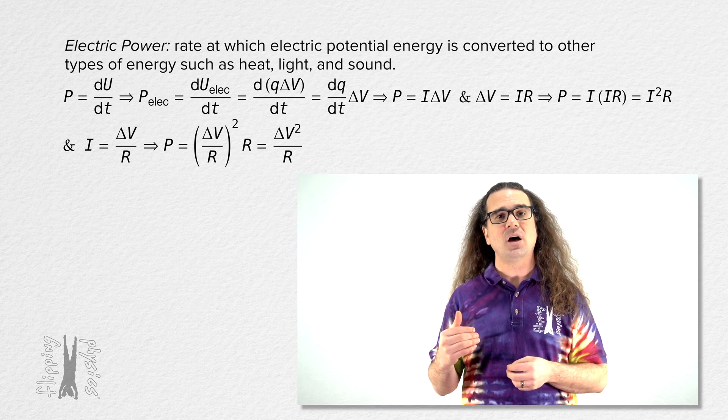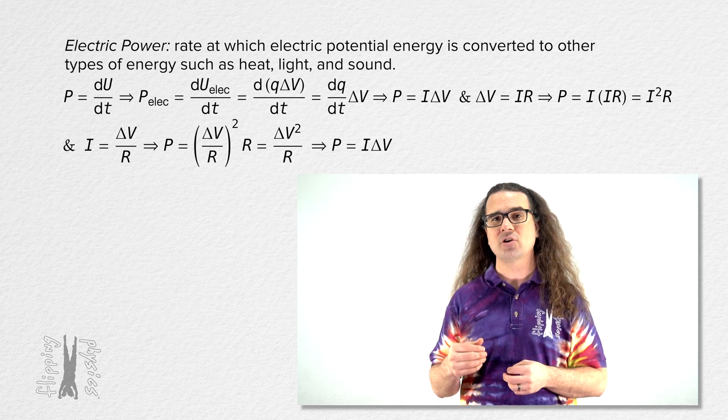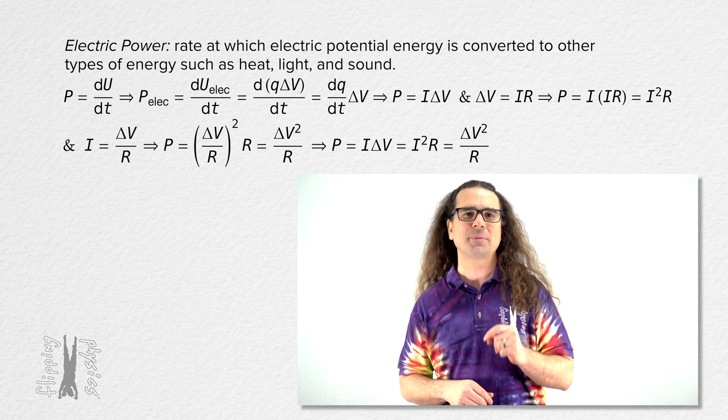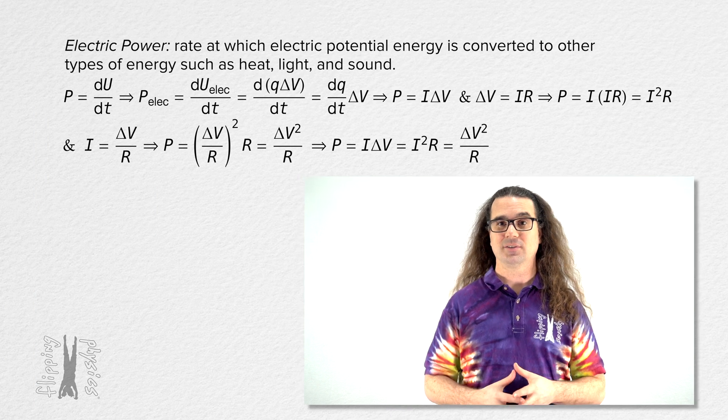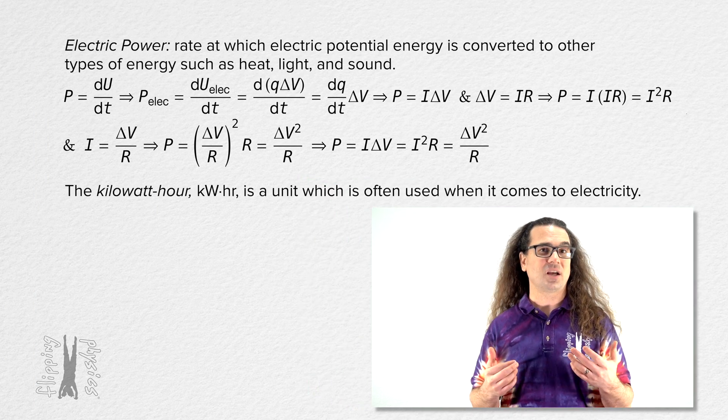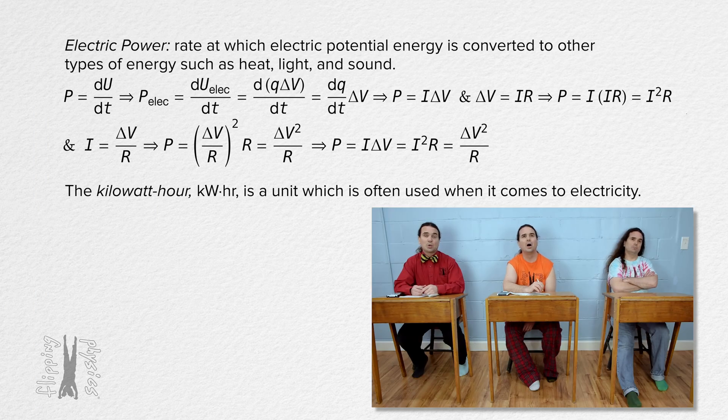We just used Ohm's law to prove electric power equals current times electric potential difference, current squared times resistance, and electric potential difference squared over resistance. Now, let's look at a unit which is often used when it comes to electricity, the kilowatt hour.